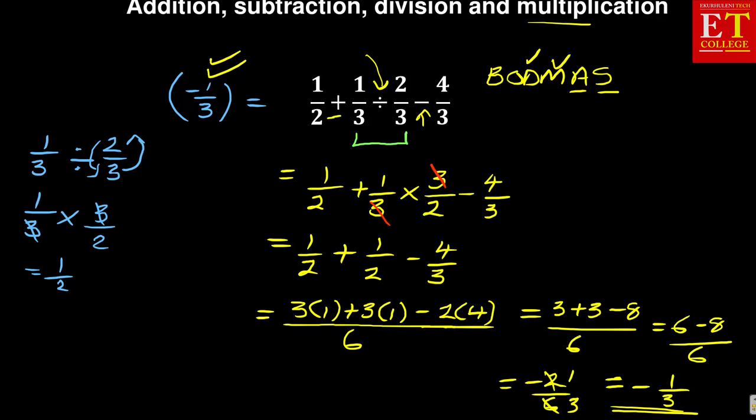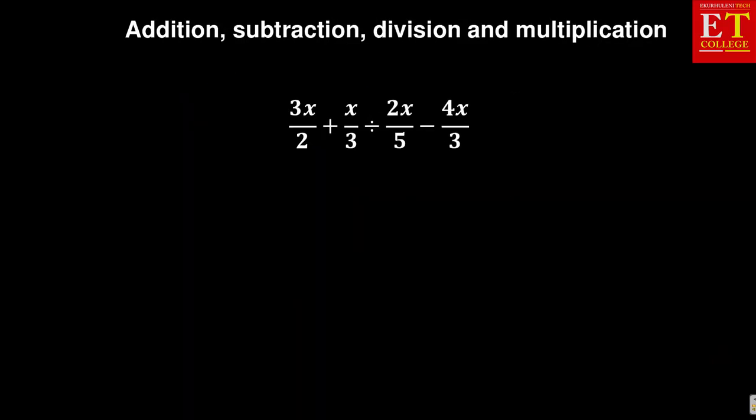That's how you approach that. Now using the same concept, let us solve the given problem here. The problem is almost identical, but the only difference now is that it's got variables, which is x. So in this case, you are given 3x over 2 plus, because of that division sign we talked about, we need to change it into a multiplication sign. So it will be x over 3 times 5 over 2x minus 4x over 3.